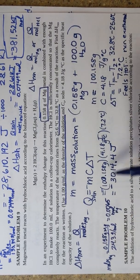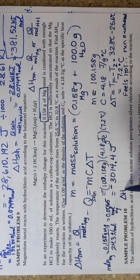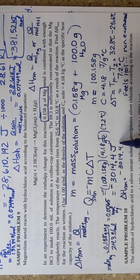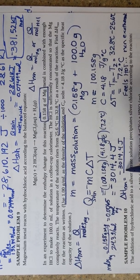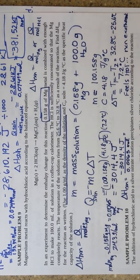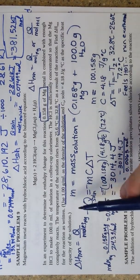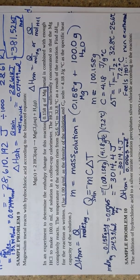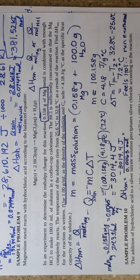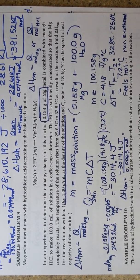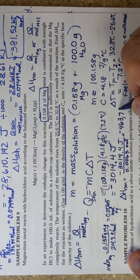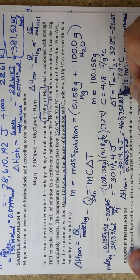Now if I want to solve for delta H, I'm going to take this number, negative 3014.4 Joules, and divide it by 0.0065 moles. I'll get my answer in Joules per mole. I'll divide these two numbers and I get a huge number, negative 463,753.8 Joules per mole.